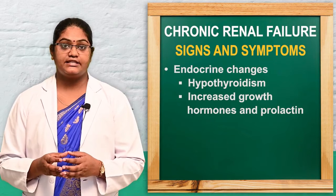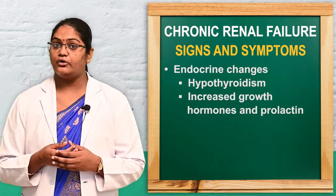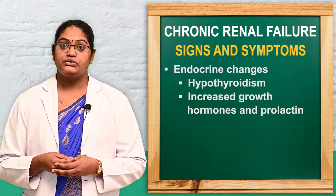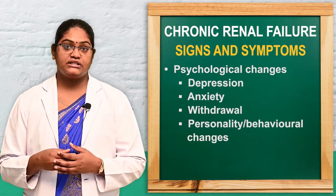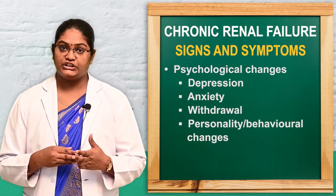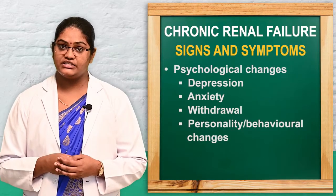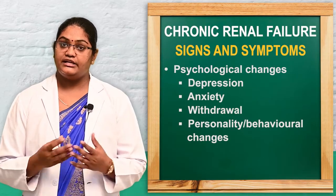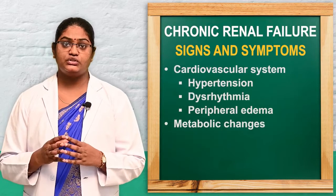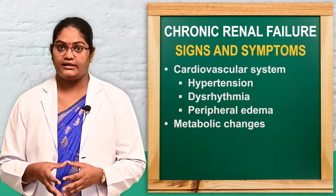In the endocrine system there is hypothyroidism and increased growth hormone and prolactin. Psychological changes include anxiety, depression, behavioral changes, and irritability. These are all the symptoms of chronic renal failure, discussed system by system because it affects each organ in the body.